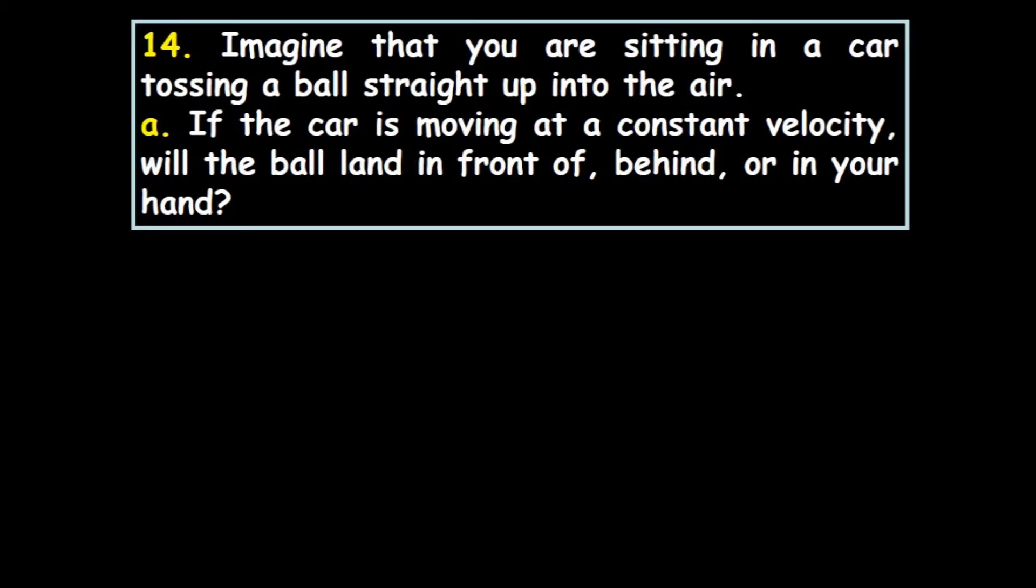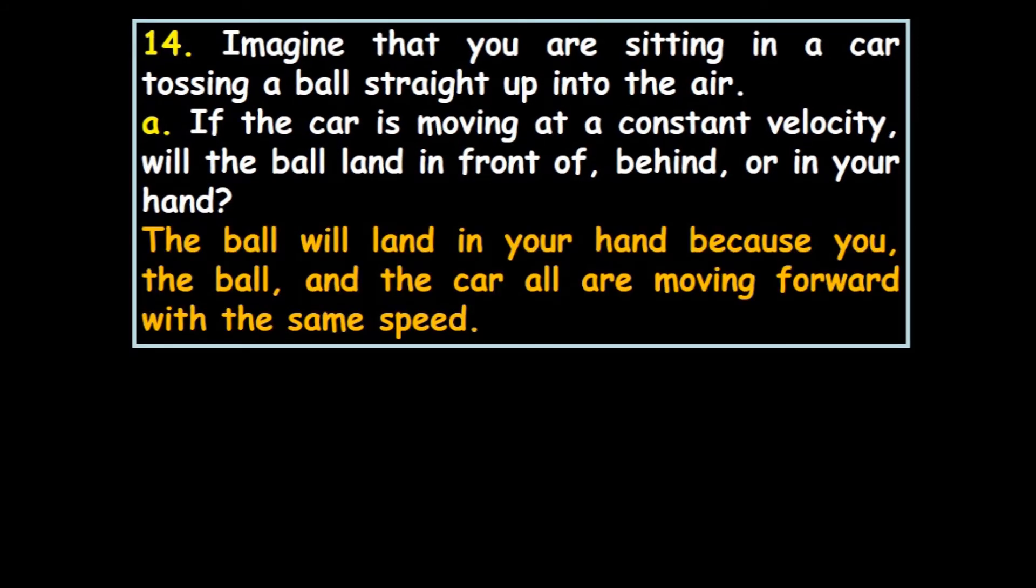Imagine that you are sitting in a car tossing a ball straight up in the air. If the car is moving at a constant velocity, will the ball land in front of you, behind you, or in your hand? The ball will land in your hand because you, the ball, the car, and the air in the car all are moving forward with the same speed. Everything is moving together, it's called inertia.